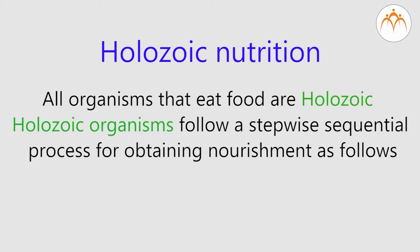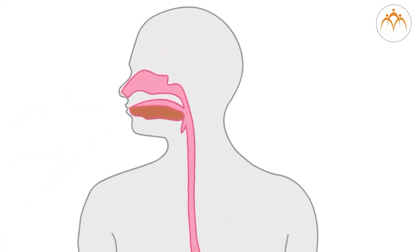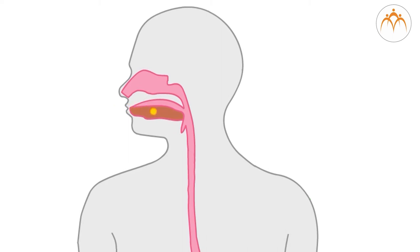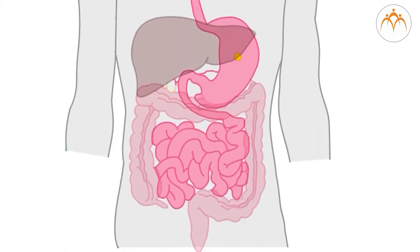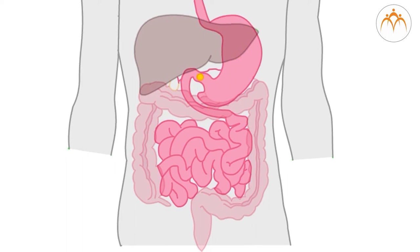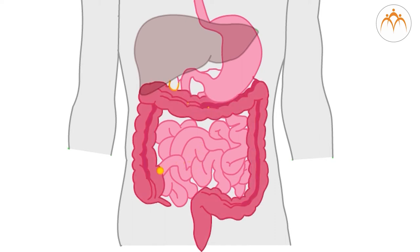Holozoic organisms follow a stepwise sequential process for obtaining nourishment as follows. Ingestion: intake of food material, solid or liquid, into the body of the organism through an opening termed as the mouth. Digestion: conversion or breakdown of complex food matter into simple soluble organic nutrients. Absorption: transfer of simple soluble organic nutrients obtained by digestion of food to various parts of the body, mostly by blood or similar body fluids. Assimilation: utilization of absorbed nutrients by various cells and tissues of the body for energy production, growth, repair and development. Ejection: removal of undigested food and waste matter from the body of the organism.